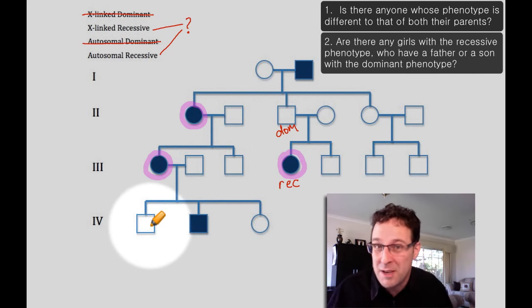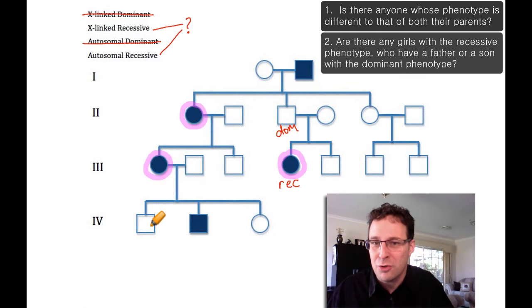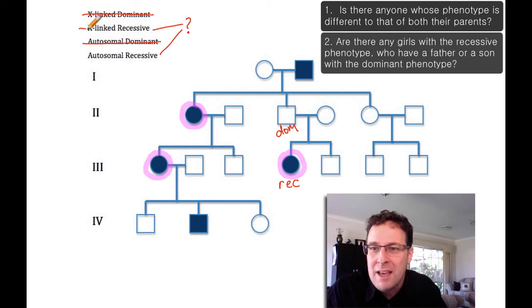So there's, in fact, four pieces of evidence here. There are four examples of a girl with the recessive phenotype having a father or a son with the dominant phenotype. What that proves, we only need one piece of evidence to prove this, we've got four, but what that proves is that this cannot be an X-linked trait. It cannot be an X-linked trait. And so therefore, it must be an autosomal recessive trait.